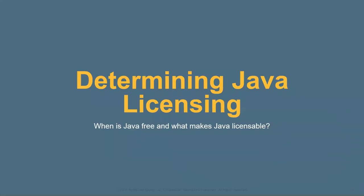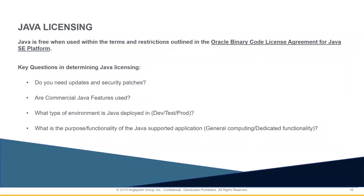Now we're going to jump into determining Java licensing — when is Java free and what makes Java licensed. Java is free when it's used within the terms and restrictions outlined in the Binary Code License Agreement. This is commonly referred to as the BCLA, not only throughout this presentation, but throughout any Oracle white papers or Oracle deliverables.